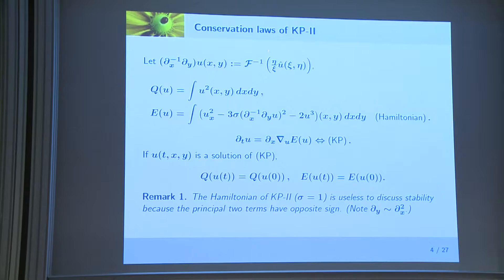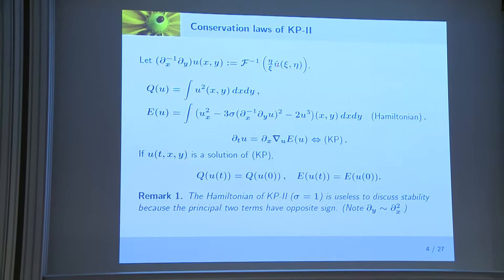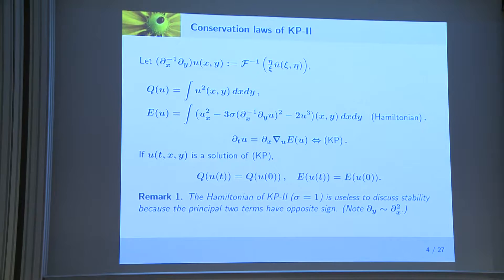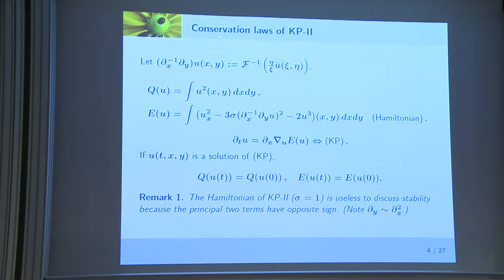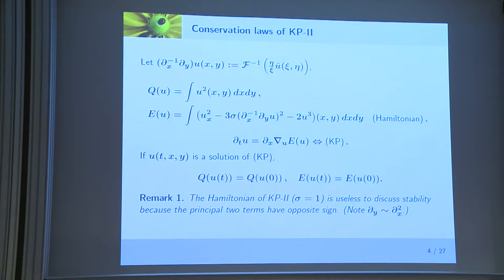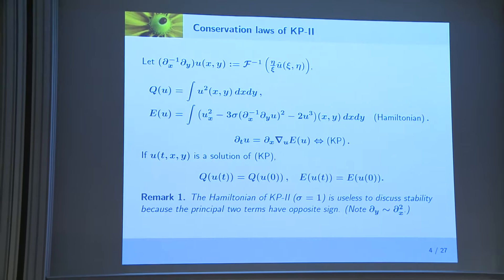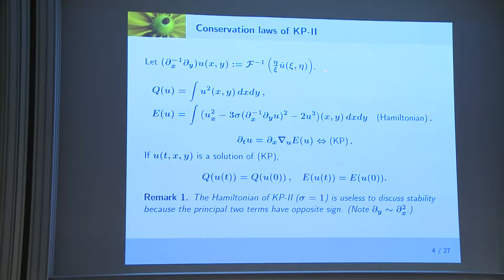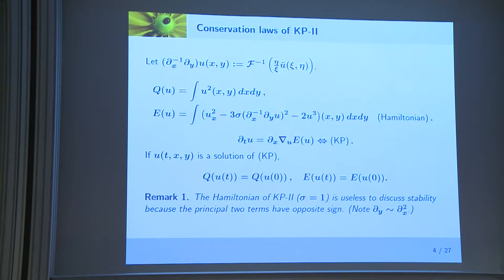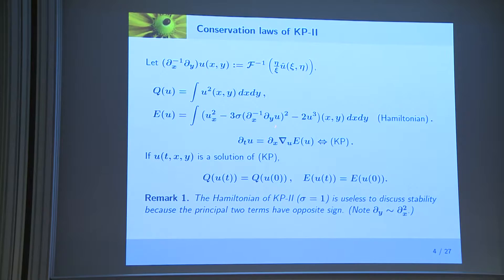I'd like to introduce conservation laws of the KP2 equation. In the conservation law I use a notation defined by the Fourier transform eta divided by c times U-hat, the Fourier transform of U. The inverse Fourier transform of this quantity is defined accordingly. As with the KDV equation, the L2 norm is conserved for localized solutions. Moreover, it has a Hamiltonian written in a specific form. The KP equation is formally equivalent to the Frechet derivative of this Hamiltonian multiplied by the adjoint operator d/dx. Formally, it is easy to see that both the L2 norm and the Hamiltonian are preserved.